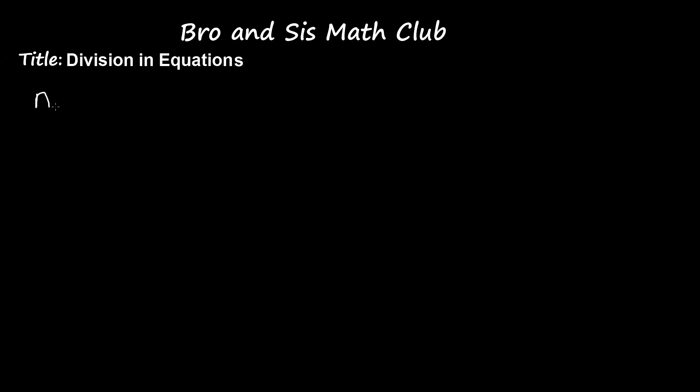Here's our problem: n over 7 is equal to 6. Now, we're trying to solve for n. So we're trying to put n all by itself. We're trying to isolate the n.